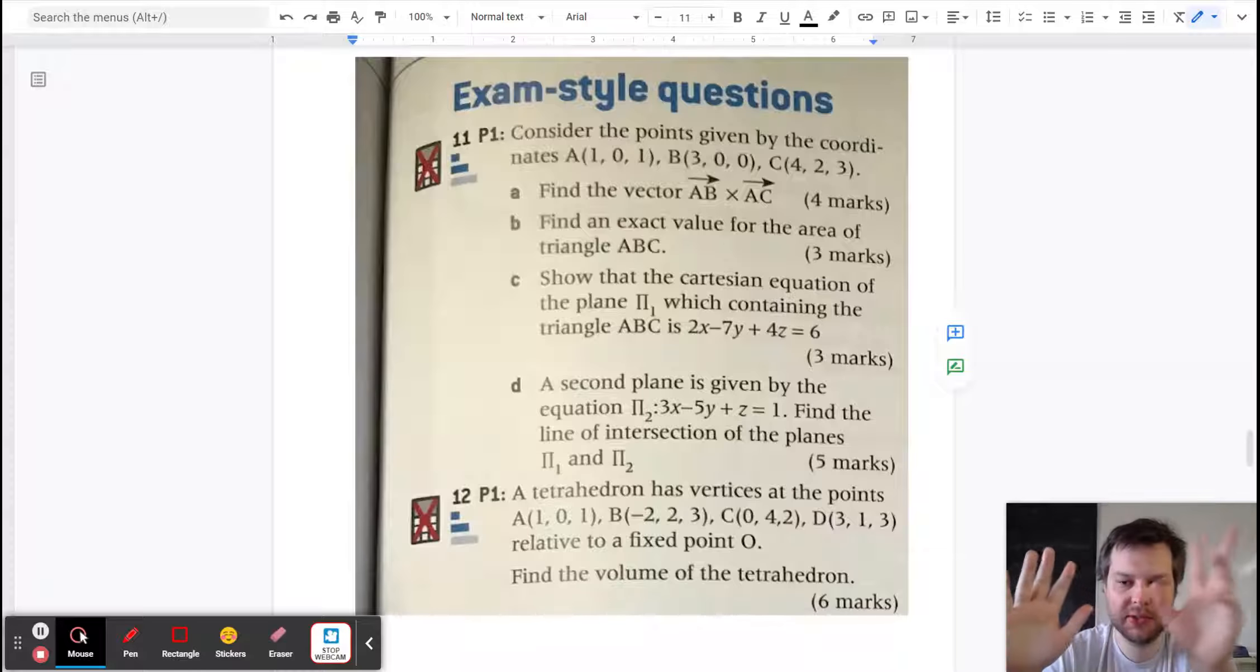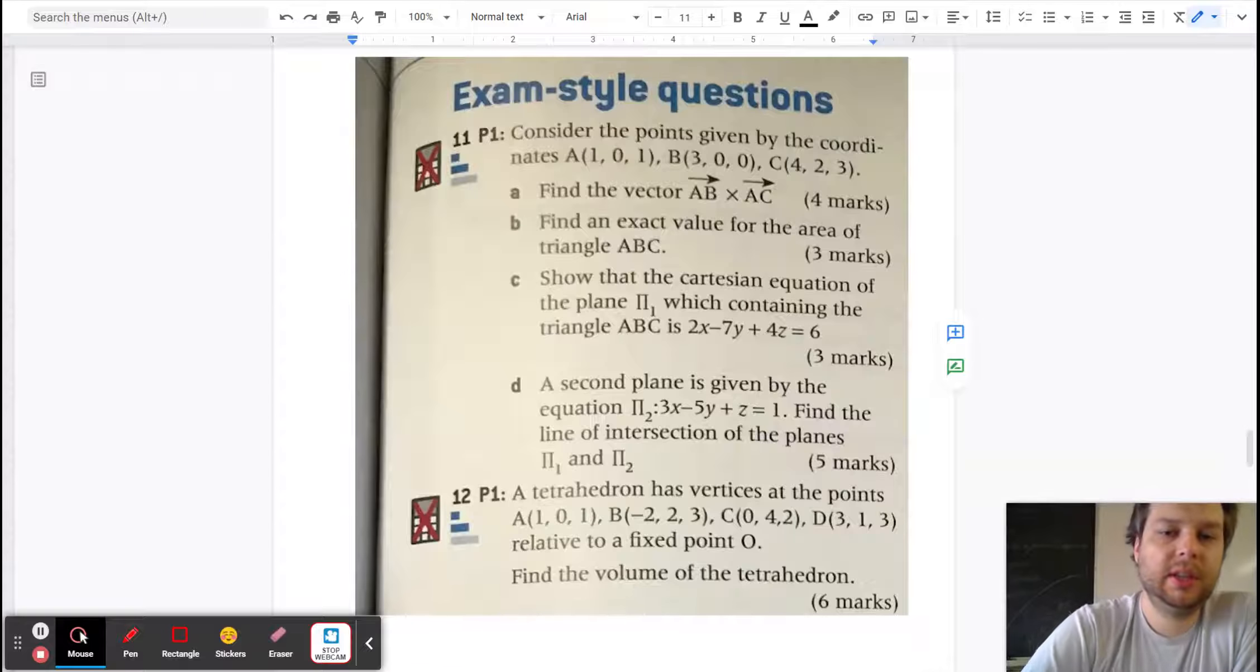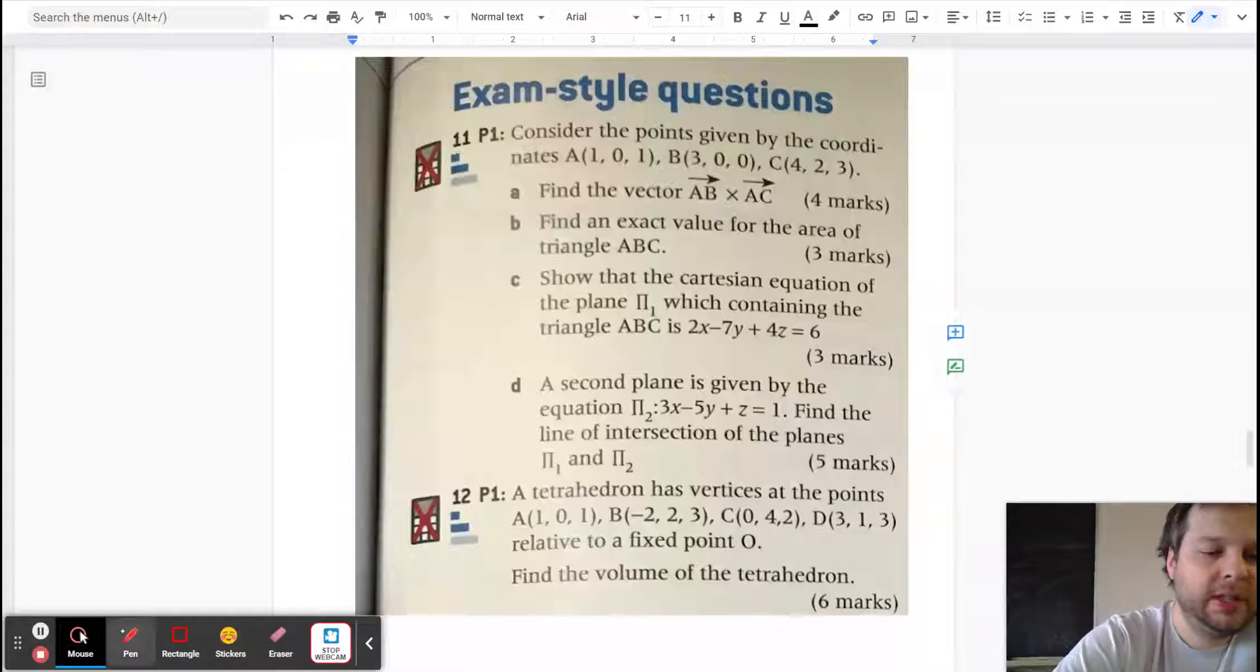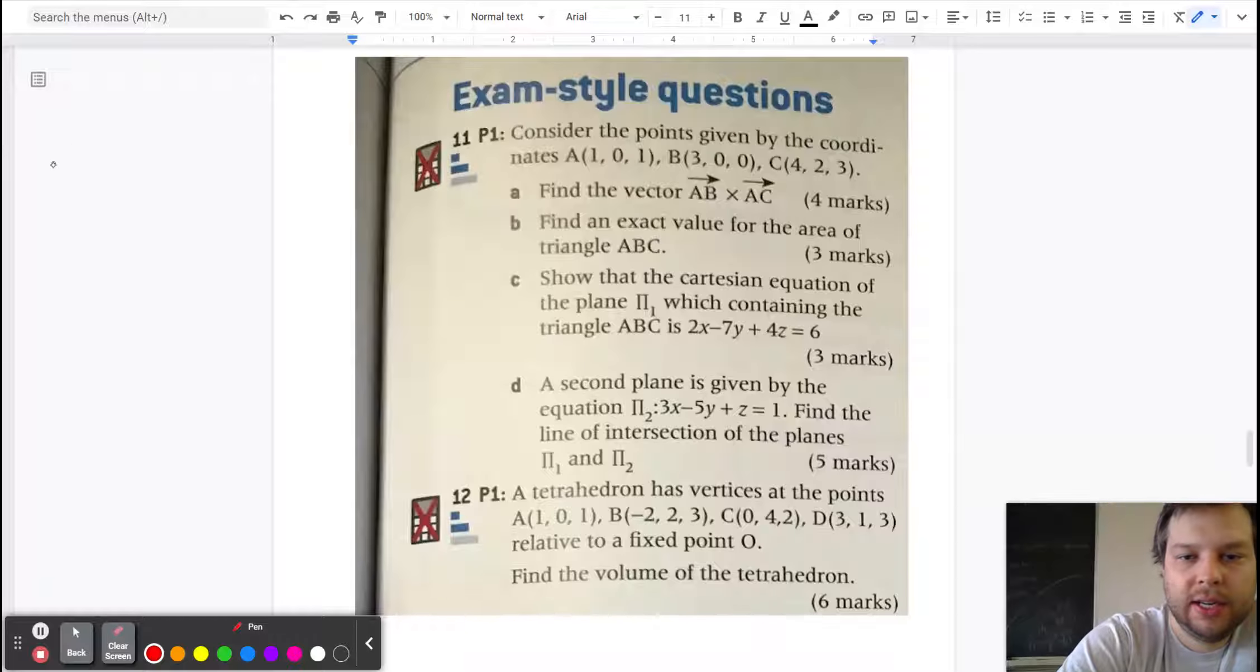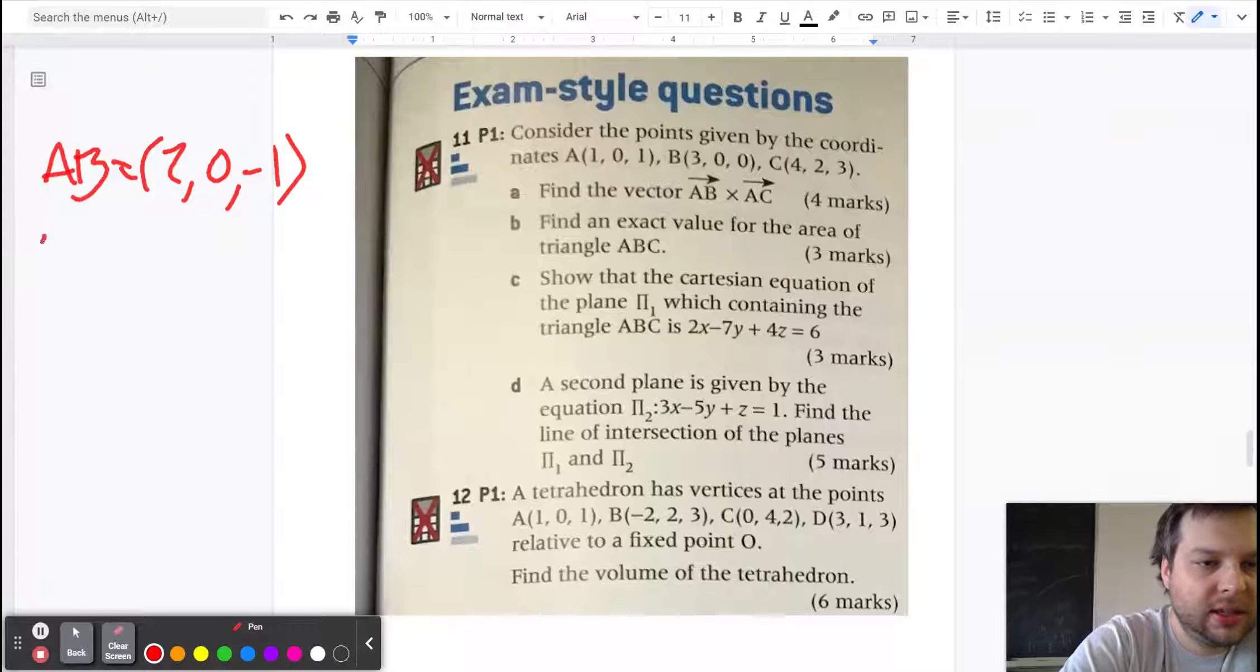All right folks, moving on to the exam style questions. Here we go with a new set of points. Let's find the vector AB. AB is (2, 0, -1) and the vector AC is (3, 2, 2).